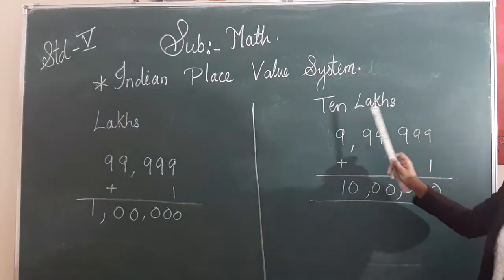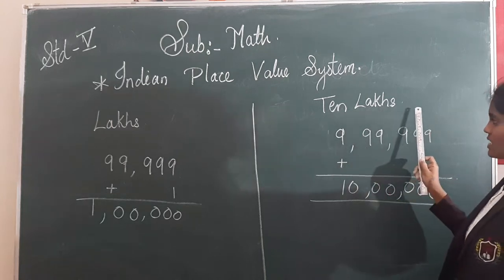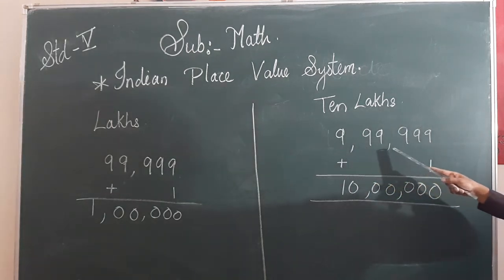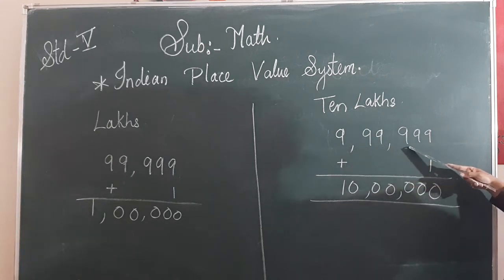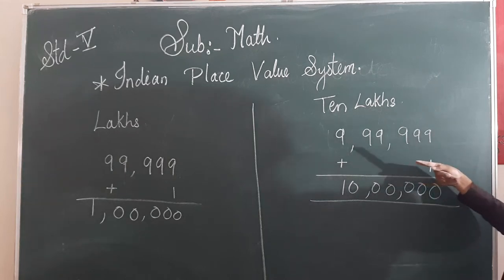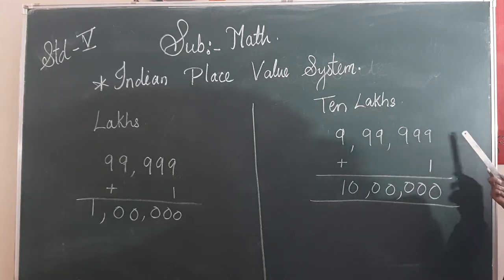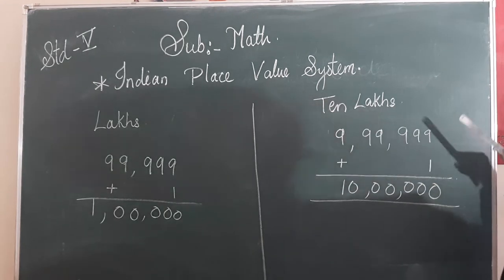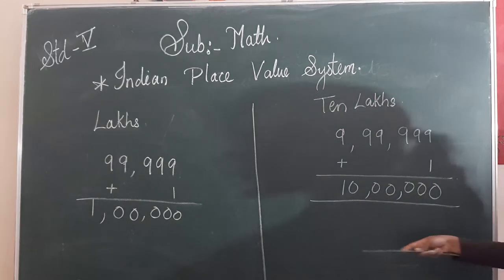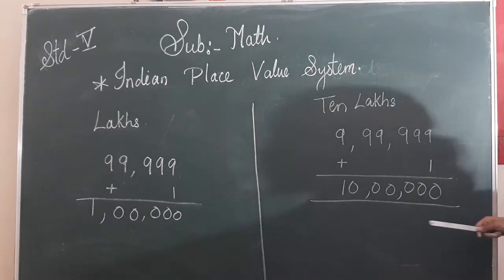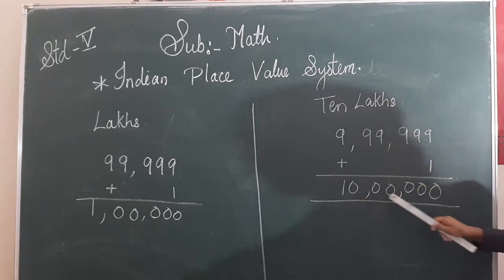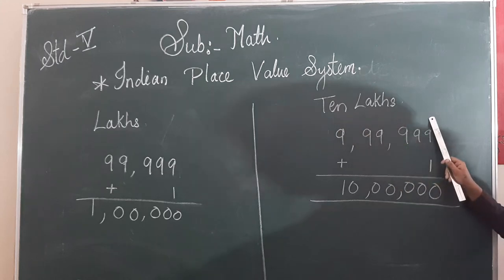Next we have ten lakhs. Here I have written nine lakhs ninety-nine thousand nine hundred and ninety-nine. This is the greatest six-digit number. When I add one, I get a seven-digit number. What do I call this seven-digit number? Ten lakhs.